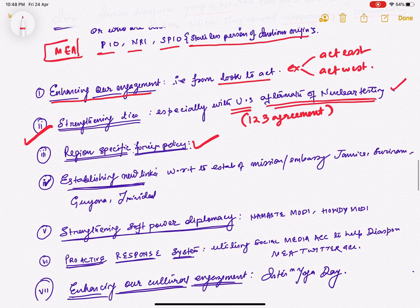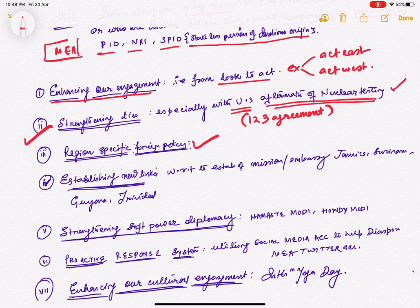Next, establishing new links. When I say establishing new links, whenever we are establishing a foreign embassy or mission in any country, it was also one of the reasons of the Indian community that was present there. Example: Jamaica, Suriname, Guyana, Trinidad. India started having missions or embassies because of the existence of Indian diaspora there.